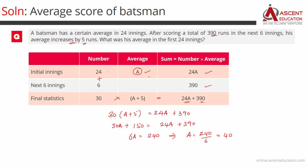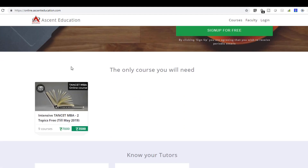The question asks for the average in the first 24 innings, which is the value of A. So 40 is the correct answer to this question.